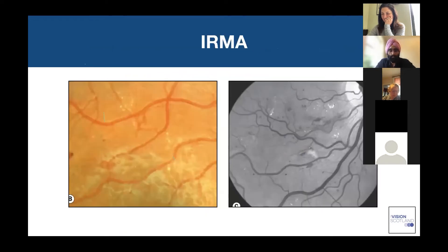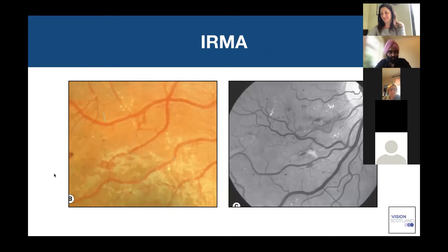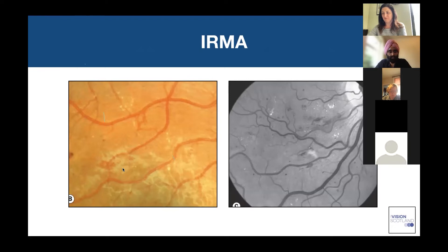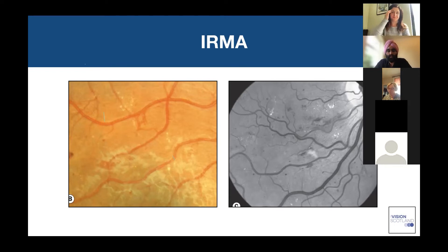IRMA — intraretinal microvascular anomalies — are often asked about. These are vascular communications between the arterial and venous circulation. These tributary vessels lie within the retina; they don't grow above the retina and are slightly more organized than new vessel formation. This is a feature of pre-proliferative diabetic retinopathy, and if you see these, the next slide provides more context about when referral is needed.